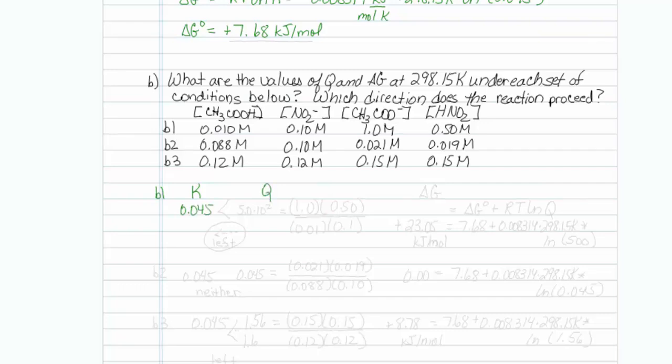Q at this temperature is going to be equal to products over reactants raised to their coefficients. So that would be 1 molar acetate, 0.5 molar nitrous acid, over 0.01 molar acetic acid, and 0.1 molar nitrite. Putting that into my calculator, I'm going to get a value of 500, or 5.0 times 10 to the second.